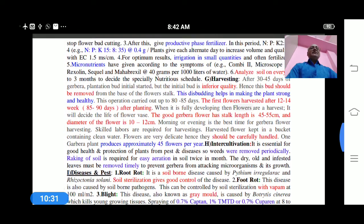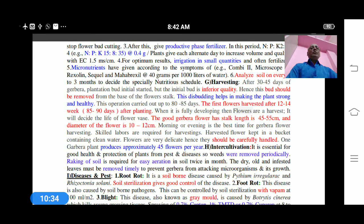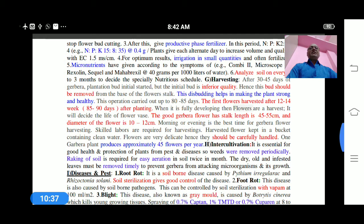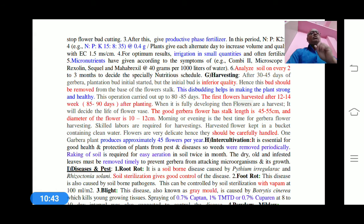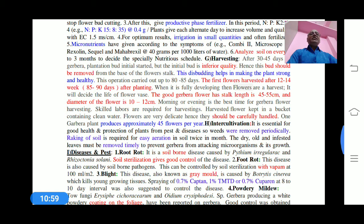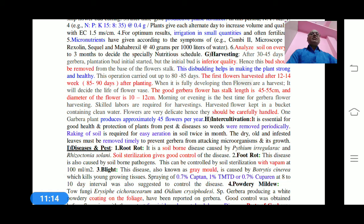For harvesting, after 30 to 45 days of gerbera plantation, initial budding starts but the initial buds are very inferior quality. You have to understand that such inferior quality buds should be cut from the plants, and only healthy buds should be allowed to grow. This helps maintain our quality of flowers and produces good quality flowers. This budding helps make the plant strong and healthy.